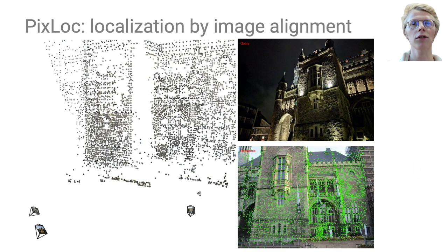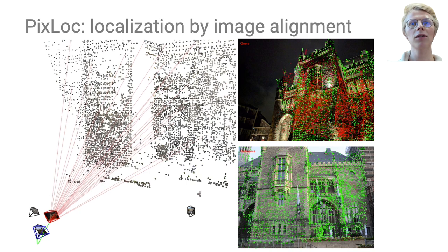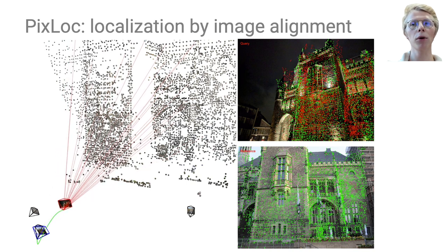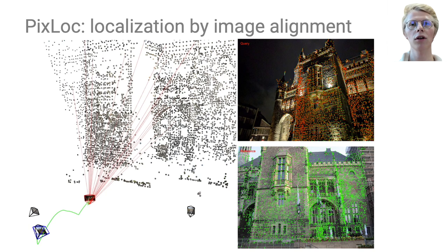Let's visualize the process. We isolate a local point cloud with image retrieval and initialize PixLoc with a reference pose. The feature alignment then iteratively refines the pose by minimizing a direct feature metric cost until convergence. Here we show the current reprojections in red, but PixLock does not rely on explicit correspondences.